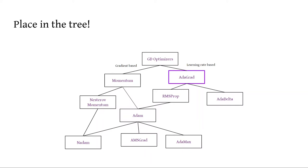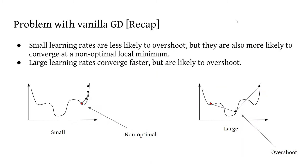So where is its place on the gradient descent optimizer tree? As you can see, on the left we have gradient-based optimizers such as momentum, and on the right we have learning rate-based optimizers such as Adagrad. It's important to note that there are actually many optimizers that are built off of Adagrad, such as RMSProp or Adadelta and more.